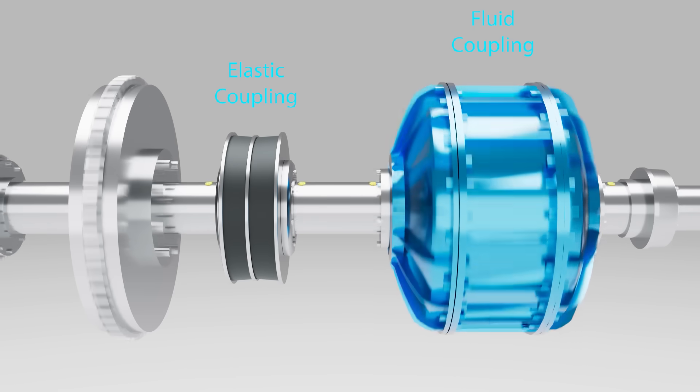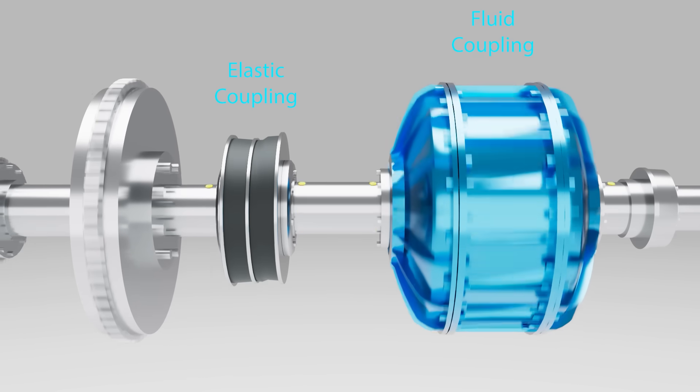The elastic coupling connects two shafts. It absorbs vibrations and reduces stress on both shafts.